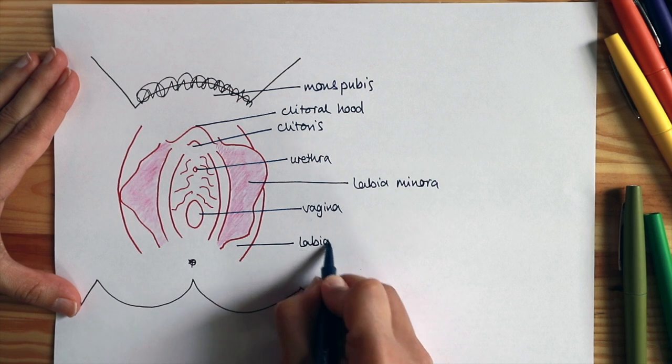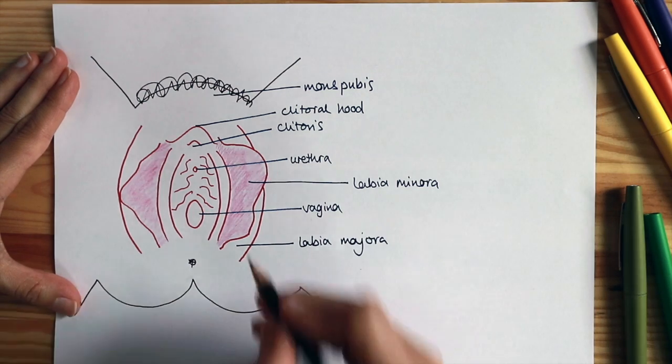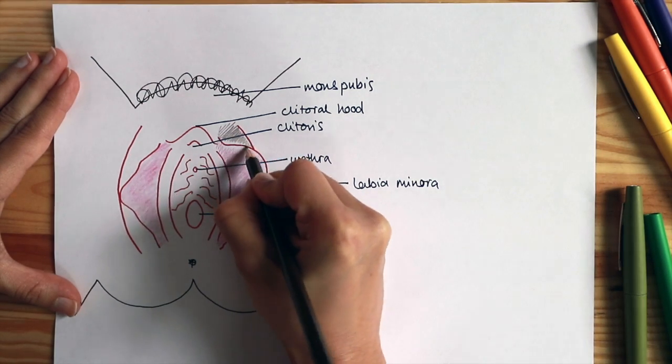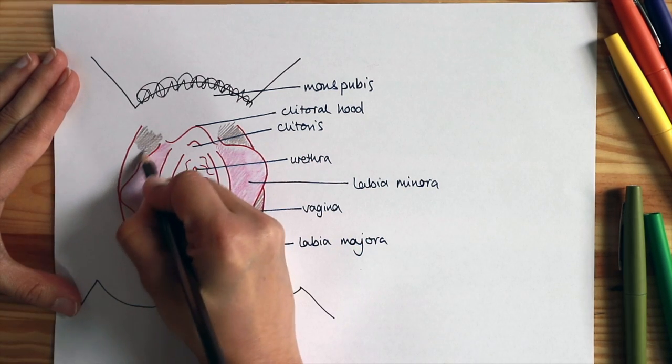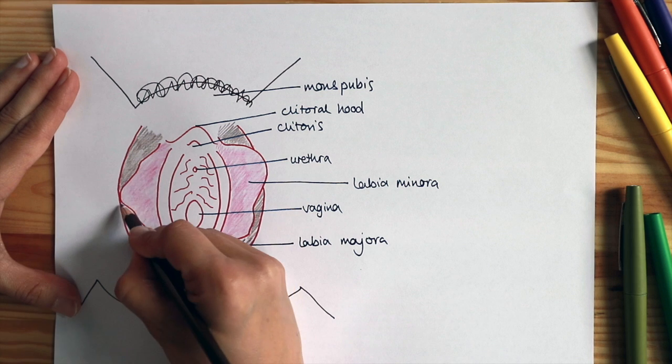Then we have the labia majora or the large outer lips. These are covered in skin, but this skin is actually often much darker than the surrounding skin. And that's due to changes in the hormones that occur at puberty.